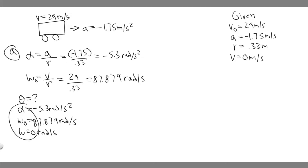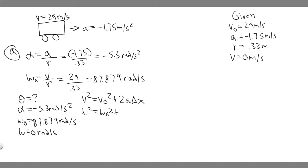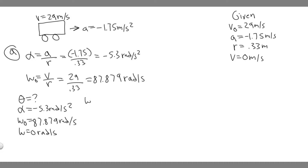Notice we have three variables so we can solve for theta. Think about these just like kinematic equations. For normal kinematics it's v squared equals v₀ squared plus 2a times delta x. For rotational kinematics, it's omega squared equals omega₀ squared plus 2 times alpha times theta. Theta is the position, alpha is the angular acceleration, and omega is the angular velocity.